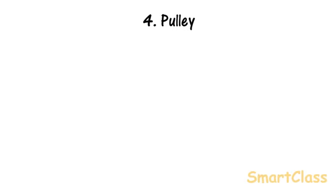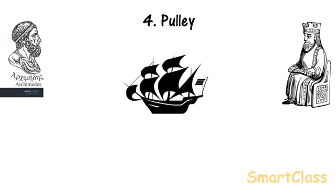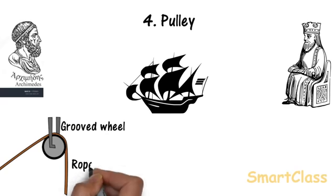Pulley. Archimedes was once asked by King Heron of Syracuse to single-handedly drag a large ship up the bridge, and he was able to do that without any help. He did this with the help of many pulleys. A simple pulley consists of a grooved wheel with a rope passing through it.